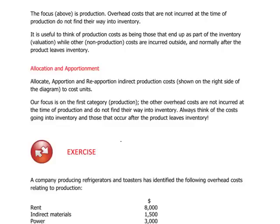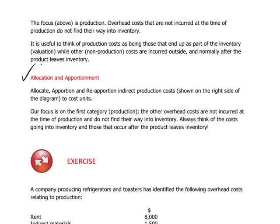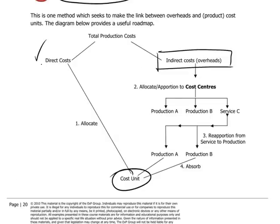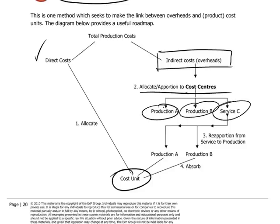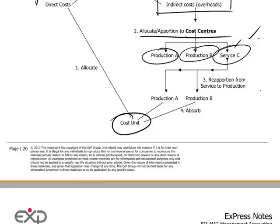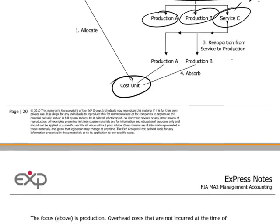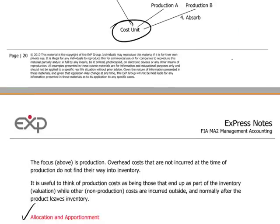Let's separate out the terms that are necessary: allocation and apportionment. The idea is to split up and distribute these costs among cost centers from an organizational perspective. We see here two production centers, A and B, and a service center. This could be, for example, a warehouse or a canteen or something similar which supports the production but doesn't actually handle the products themselves.